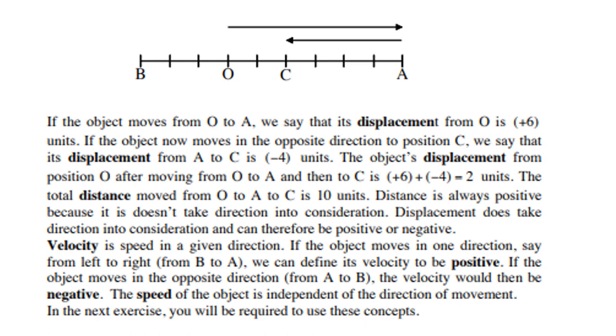If the object now moves in the opposite direction to position C, we say that its displacement from A to C is negative 4, that means a movement to the left. The object displacement from the position O, after moving from O to A, and then to C is plus 6, plus a negative 4, so the total displacement is a positive 2.